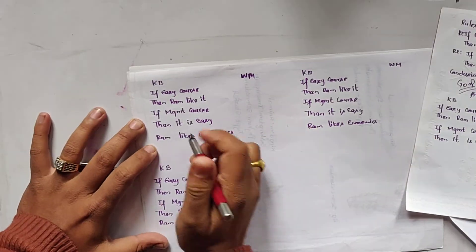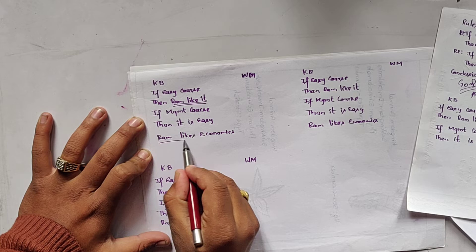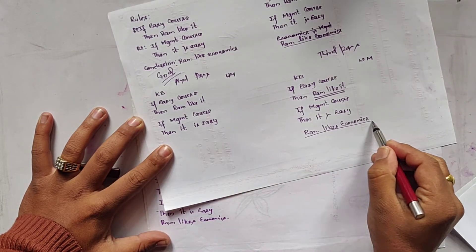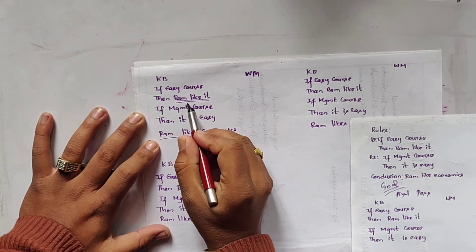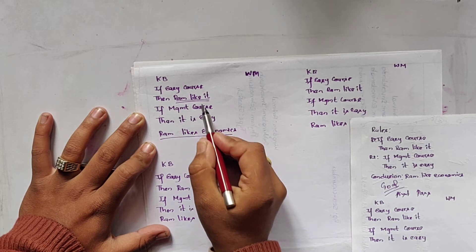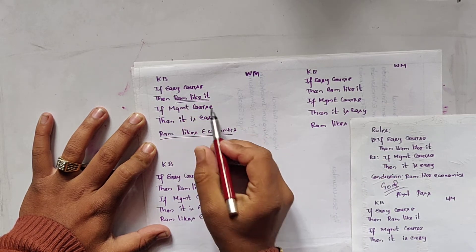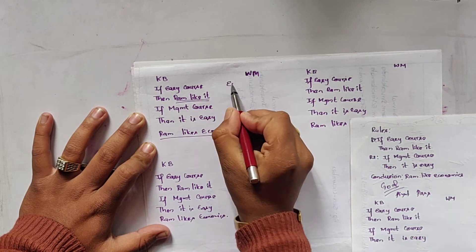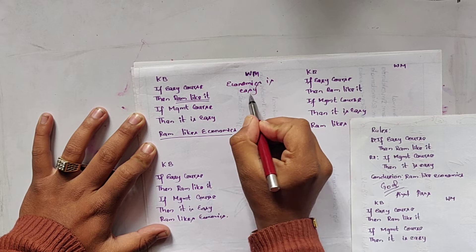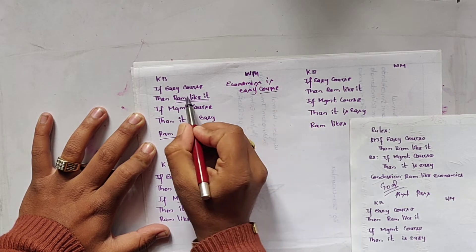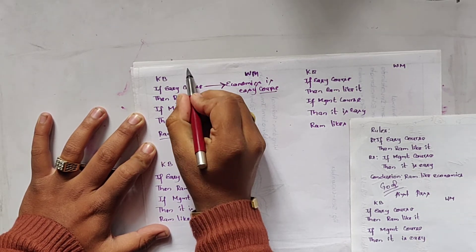Moving to the fourth pass. This was the matched one, and it is single underlined, meaning it is the newly found conclusion. Ram likes it — that means Ram likes economics. From this we retrieve the premises, which means easy course. So economics is an easy course. This is the generated premises and it is the fourth pass.